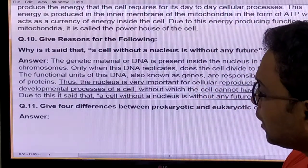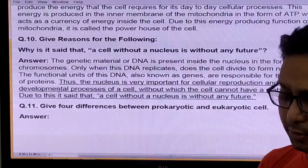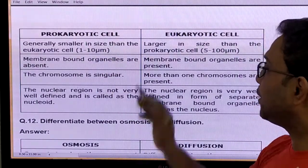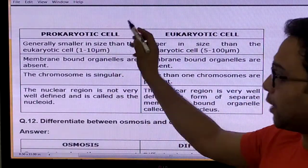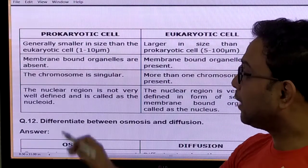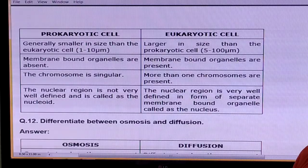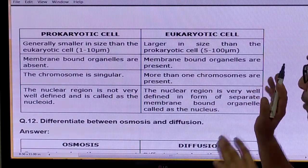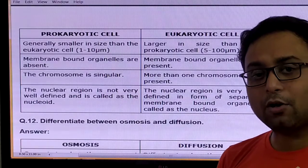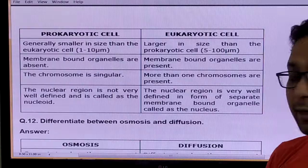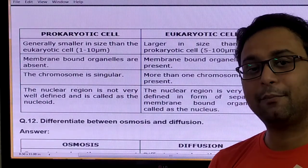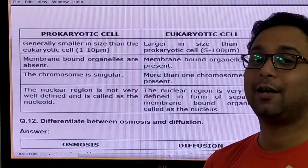Give the 4 differences between prokaryotic and eukaryotic cells. Prokaryotic cells are smaller; eukaryotic cells are larger. In prokaryotic cells, membrane-bound organelles are absent; in eukaryotic cells, they are present. In prokaryotic cells, the chromosome is singular and is called the nucleoid, and the nucleoid region is not well defined. In eukaryotic cells, more than one chromosome is generally present, and the nuclear region is well defined, enclosed by a membrane — called the nucleus.